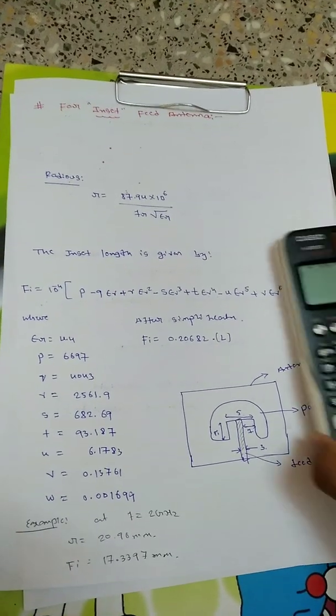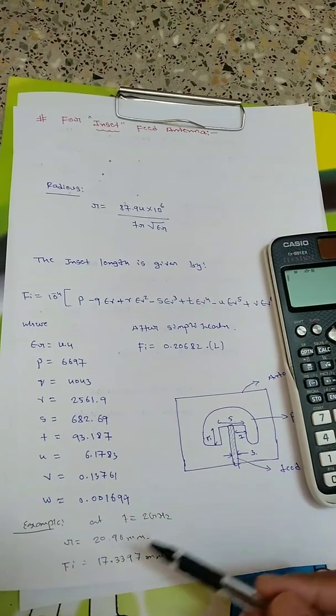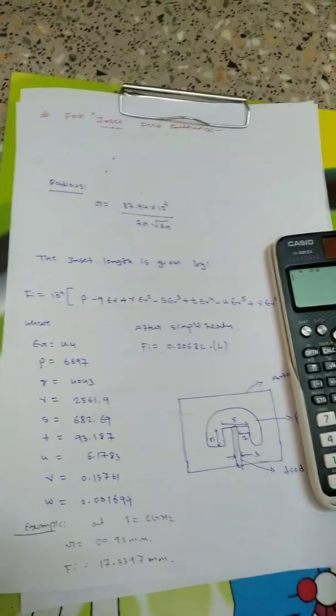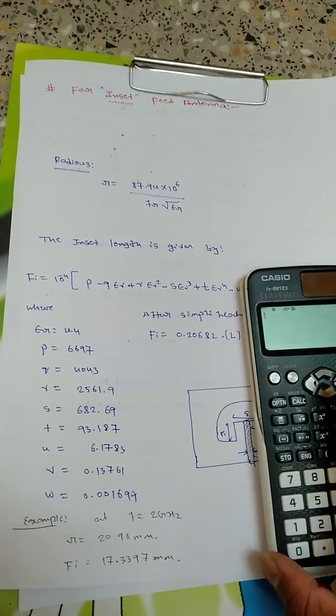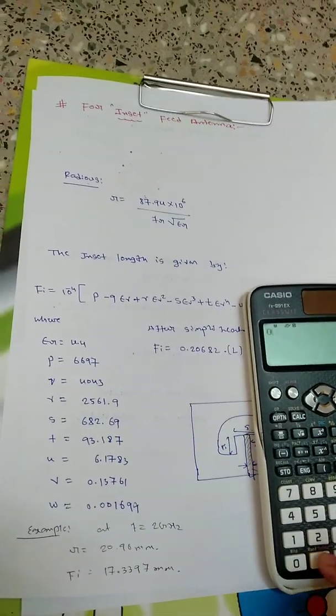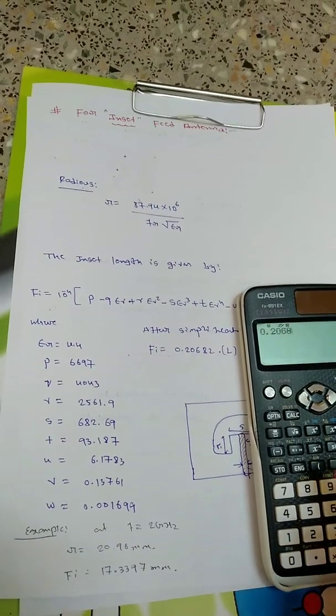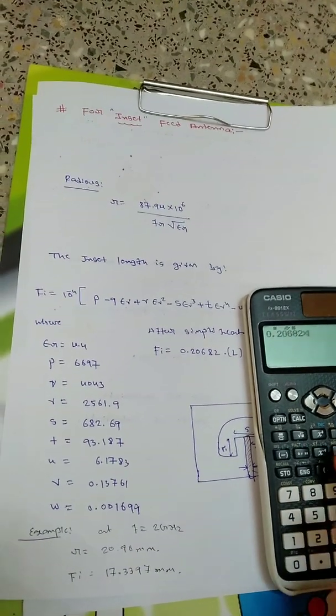If you calculate for the same frequency at 2 GHz, we will be getting 20.96 mm radius. Now let's see what we get for the insert feed.